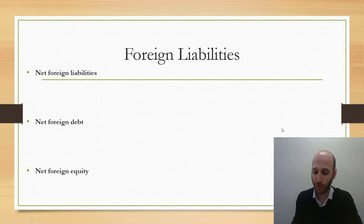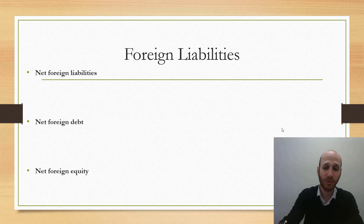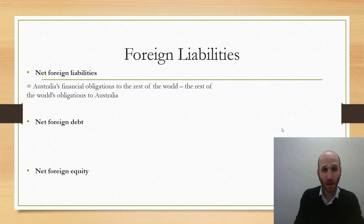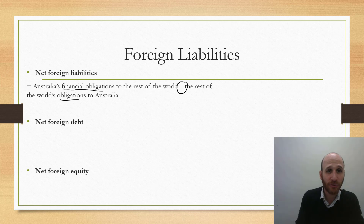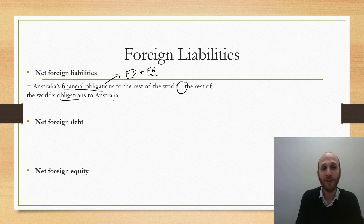A couple of definitions: net foreign liabilities as a whole is about Australia's financial obligations to the rest of the world minus the rest of the world's obligations to Australia. When we're talking about financial obligations, we're talking about foreign debt plus foreign equity. So we're looking at Australia's financial obligations to the rest of the world minus what the rest of the world owes to Australia.